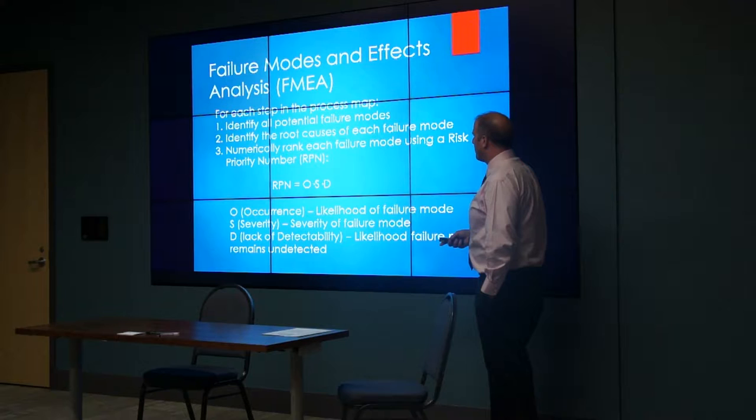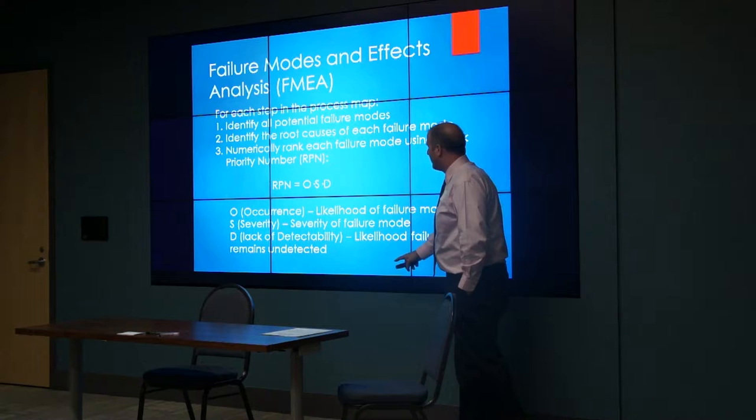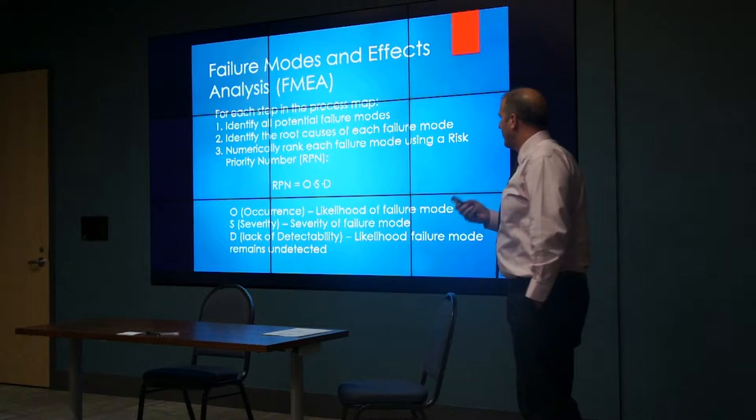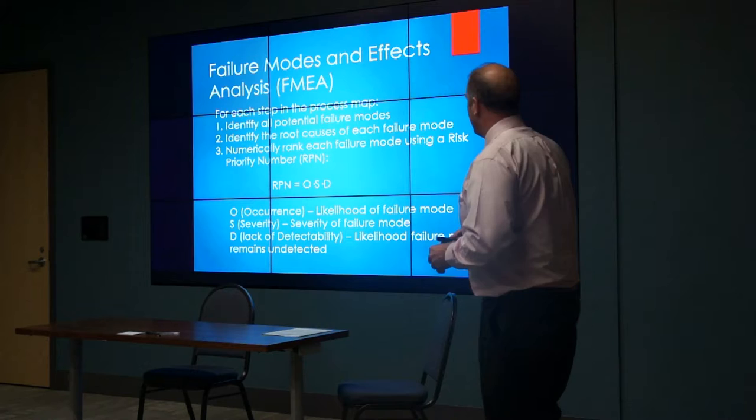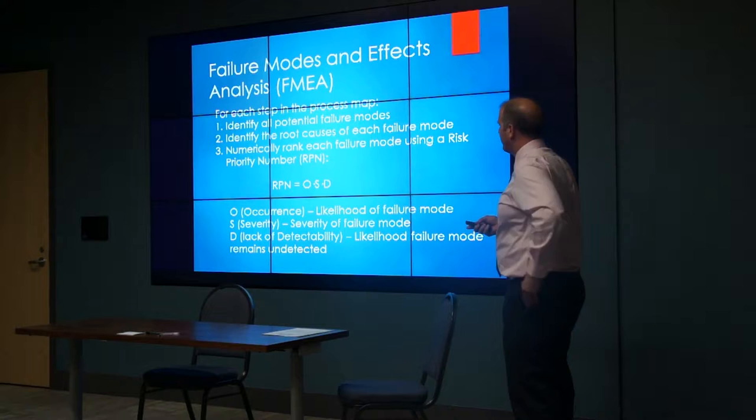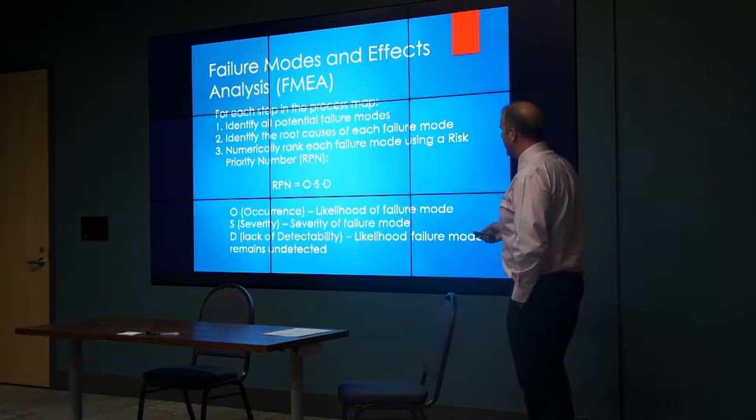O represents the probability that this could occur, with a higher number being more probable. S is the severity—the higher the number, the more severe the error if it does occur. D is the probability that it would be detected somewhere later on down the road. For example, if you entered the wrong patient ID number into the database system, then as you go back later on you might be treating or planning for a different patient. It might be found by somebody looking at a record, and there's a certain likelihood that it might be found later on, which would prevent the error from occurring.